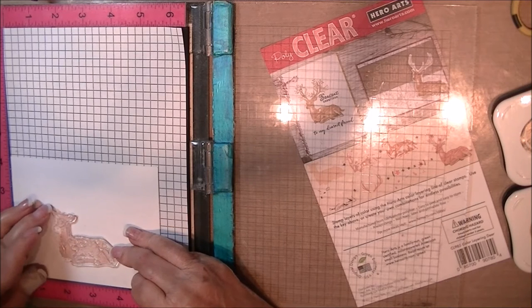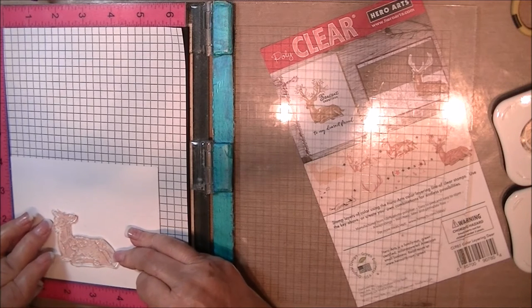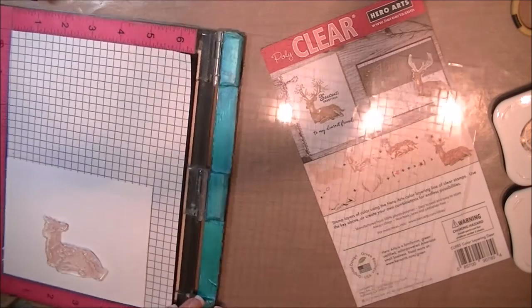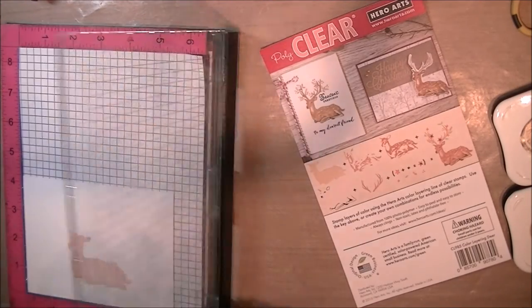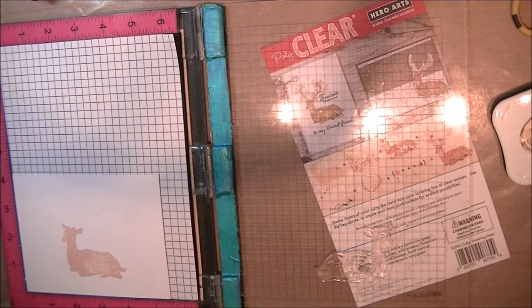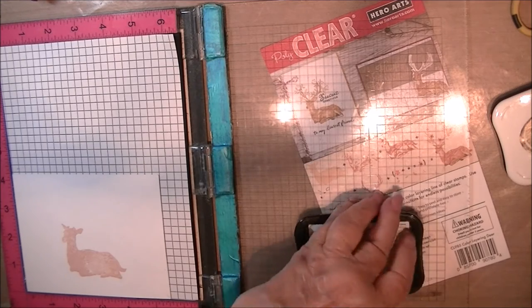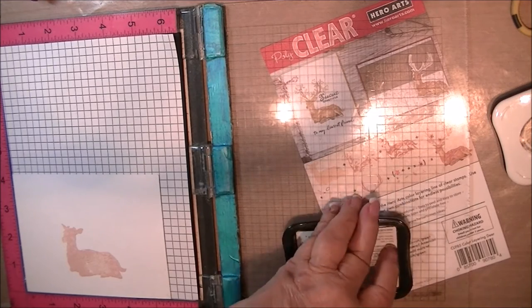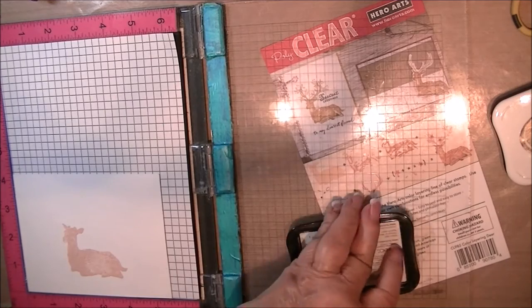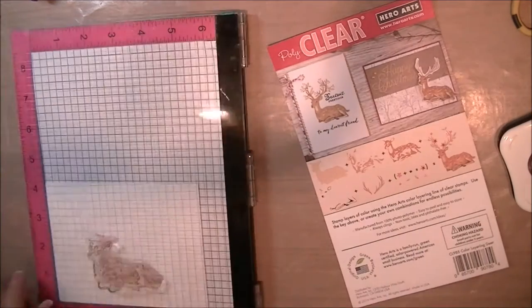For the second one, I'm lining up the tail. I can see through it pretty well. And then I'm trying to line up the nose. And I pick it up with my positioner and I come in with my second color. I believe this is the toffee, Memento toffee.